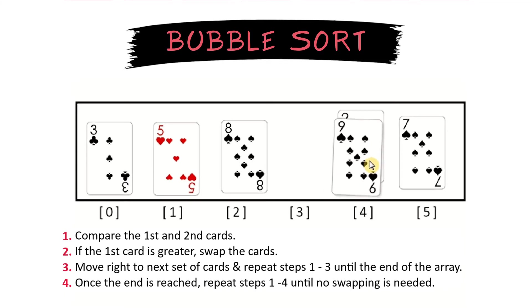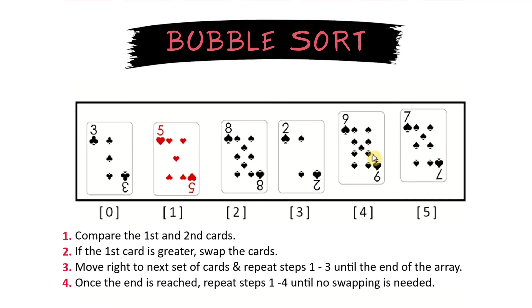We continue this with the 9 and the 2. 9 is greater than 2. Swap those 2 cards, and move on to the last 2, which is 9 and 7. Since 9 is larger than 7, we swap those.